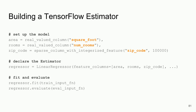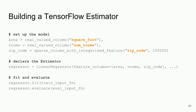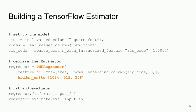We have some numeric features and also zip code, which is a sparse feature we're encoding in a particular manner. Now imagine you want to do a deep neural network regressor instead — look how much code changes: we just flip in a different type of estimator. We need to add the number of hidden units since we're now using a neural network, and we encode zip code slightly differently using an embedding column since the neural network doesn't work well with sparse features.